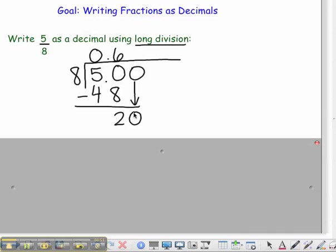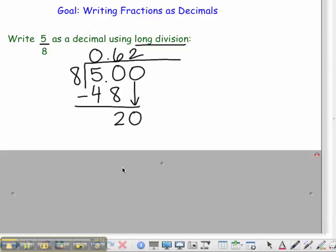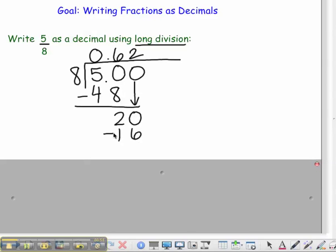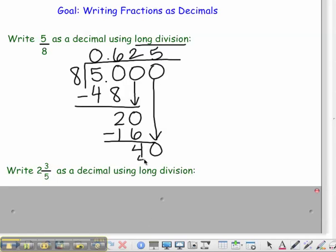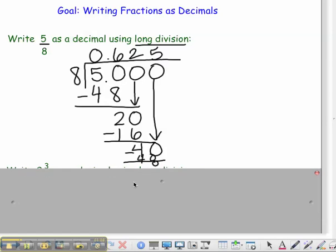So, 8 divides into 20, 2 times. 2 times 8 is 16. Subtract, you get 4. Bring down another zero. 8 divides into 40, 5 times. Subtract, and you get the remainder zero.